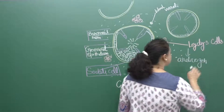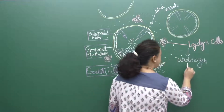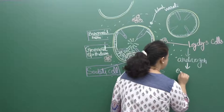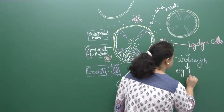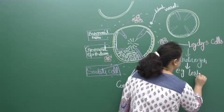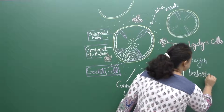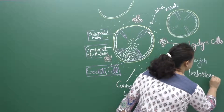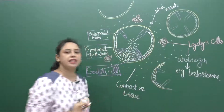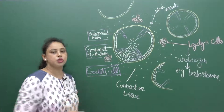The principal androgen secreted, for example, is testosterone. So it is the Leydig cells that secrete testosterone.